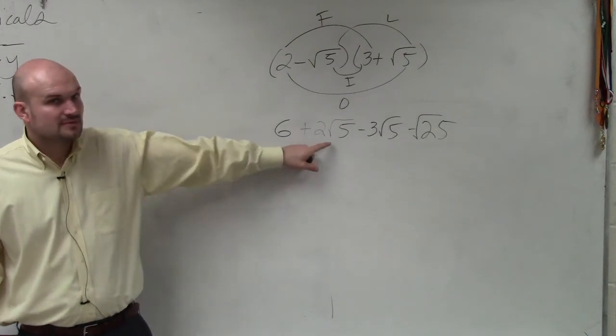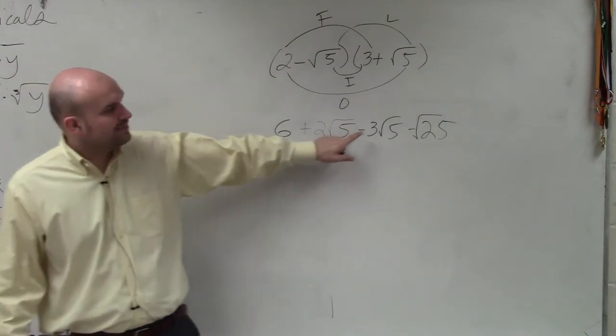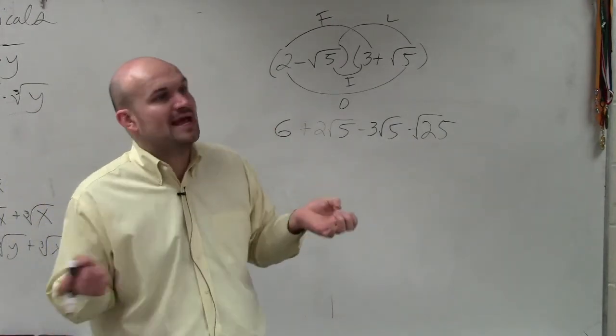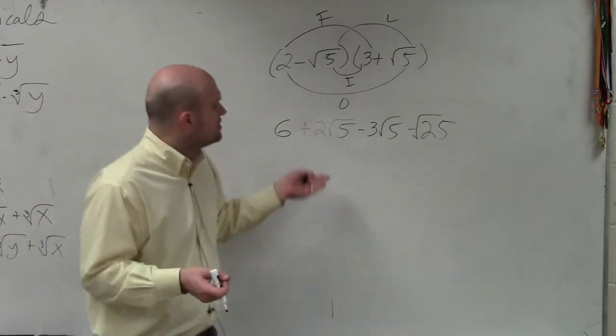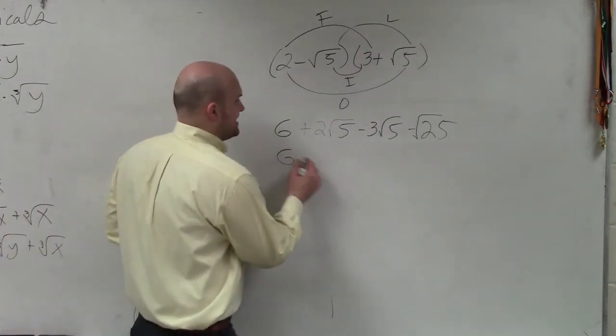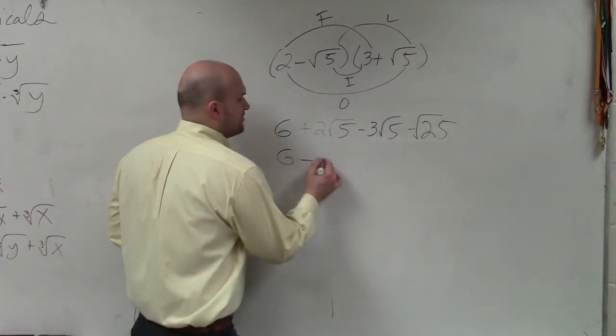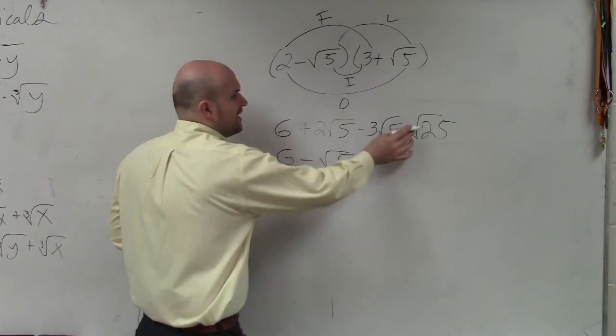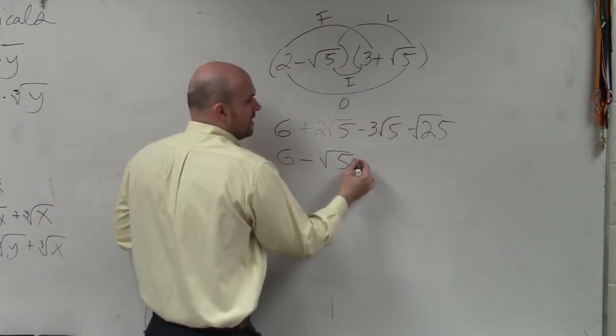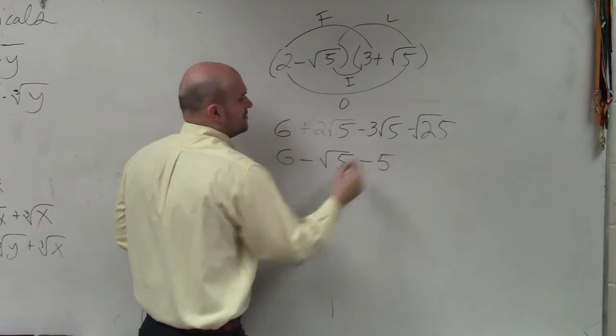So over here, we're subtracting. Remember, they have to have the same root as well as the same radicand. When you look at this, they both have the square root of 5. So this is going to be 6 minus the square root of 5. And the square root of 25 is 5 times that negative 1, so it's minus 5.